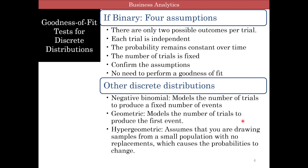Other discrete distributions we talked about: negative binomial, which models the number of trials to produce a fixed number of events — how many times should you do this before you get three or four successes? Geometric distribution models the number of trials to produce the first event — how many times should you do this before you actually get the first success?